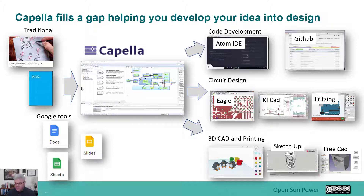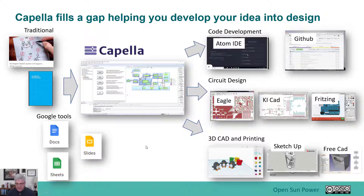Using Arcadia, you can communicate downstream to code development in an integrated development environment, to circuit design tools such as Eagle, KiCad, or Fritzing, or to 3D CAD and printing software such as SketchUp or FreeCAD. It helps you bring your idea down to those design tools so you can decide what goes in circuits and what goes in 3D CAD.